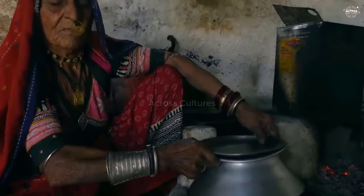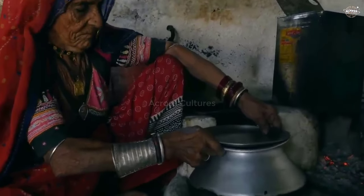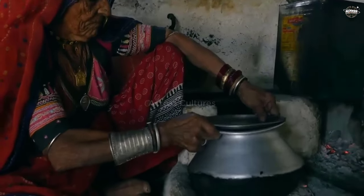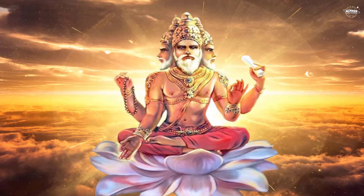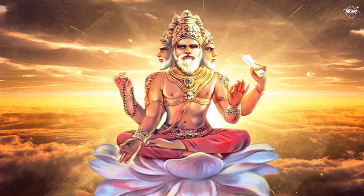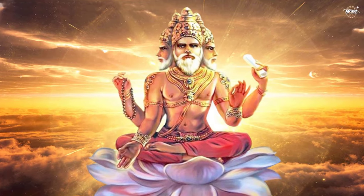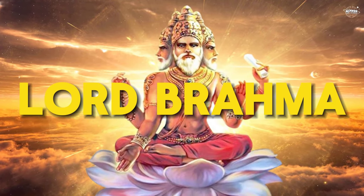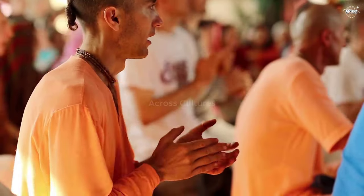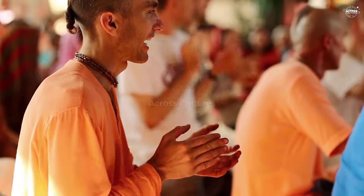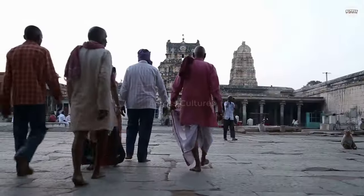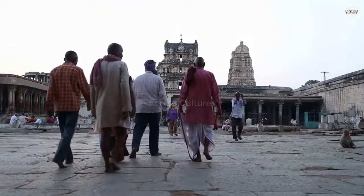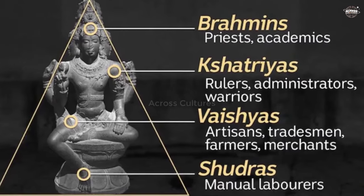Traditionally, it is believed that this caste system is one of the extensions of Varna, where four Varnas were created from the body of the Hindu lord Brahma. According to this system, Indian castes are divided into four main categories.